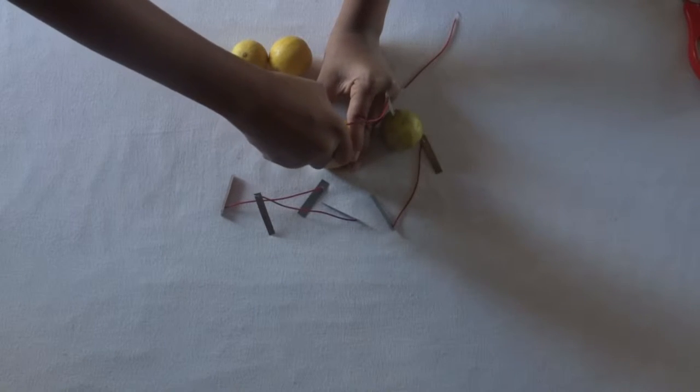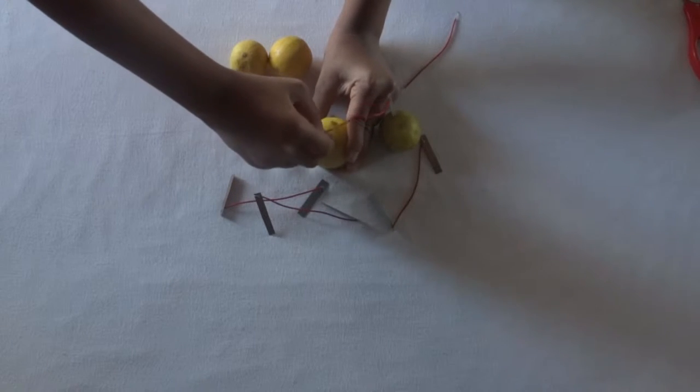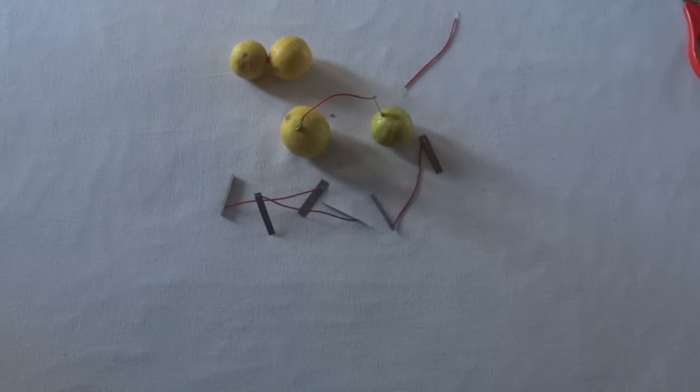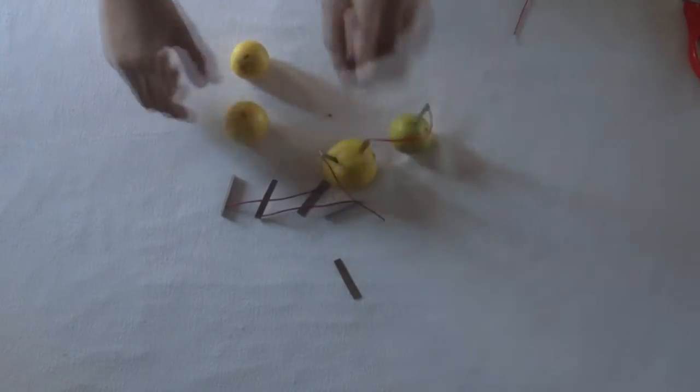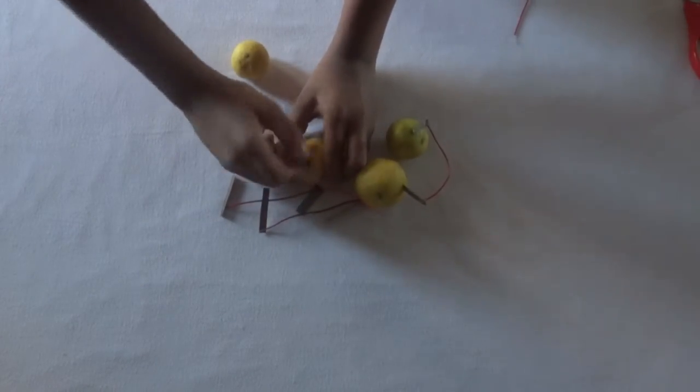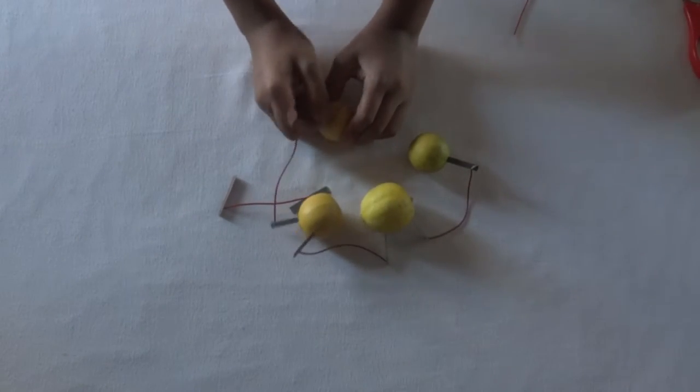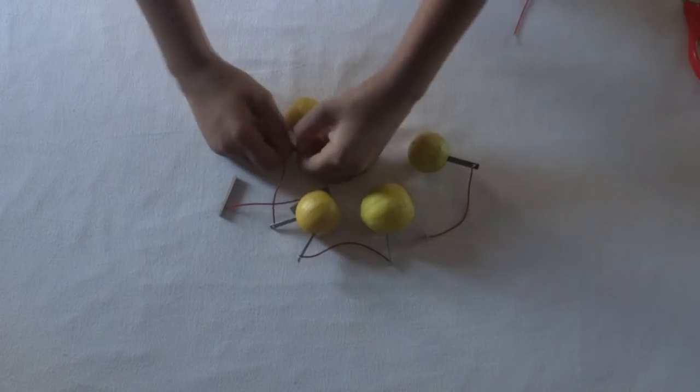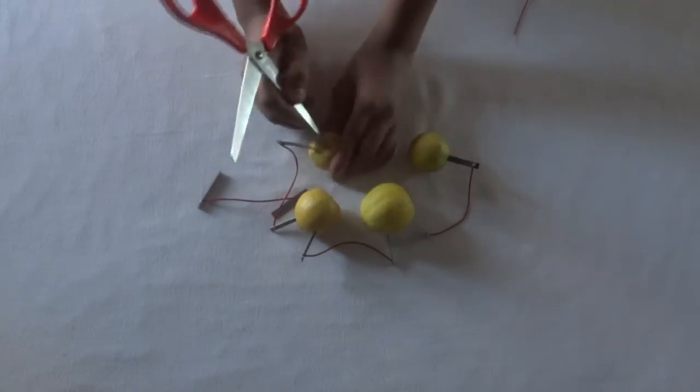And the lemon, which is the electrolyte. We will be doing the same with another 2 lemons. We are going to connect it in series in this manner. It doesn't matter how many lemons you have, the more the lemons, the more the voltage. As you can see, we have connected 3 wires in series.